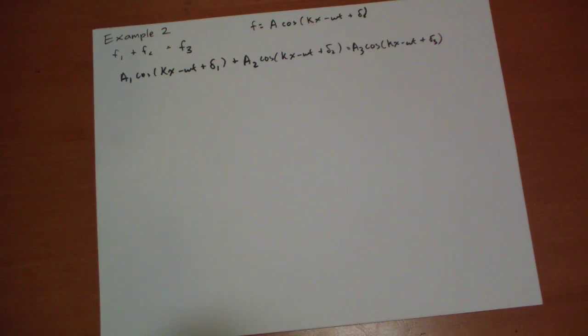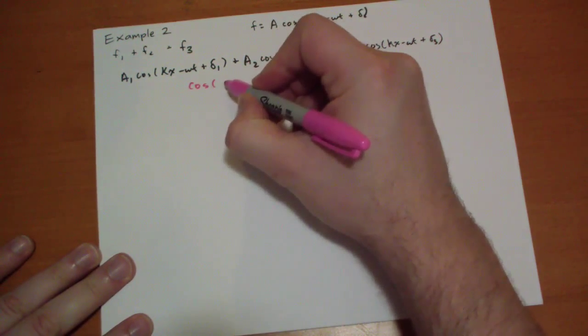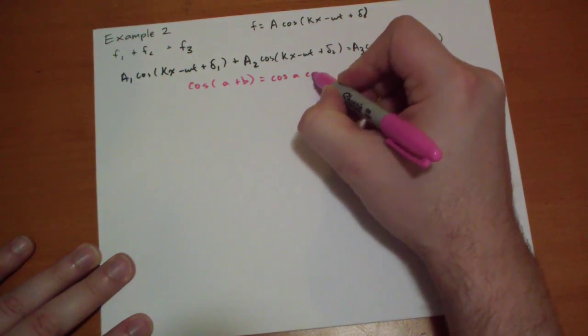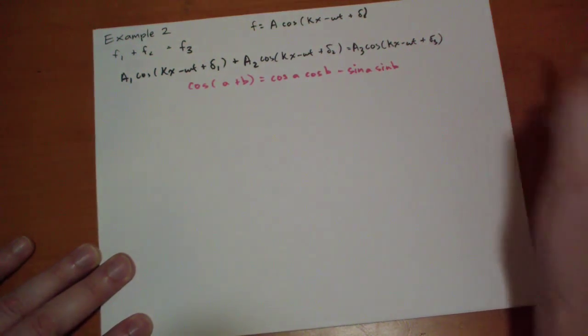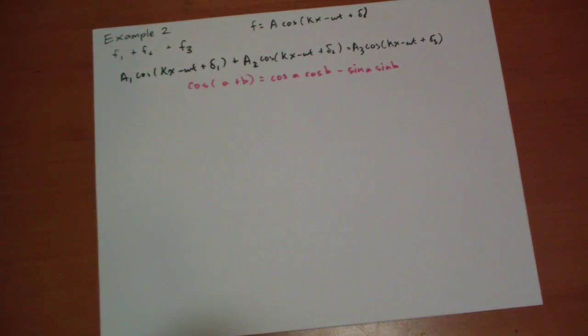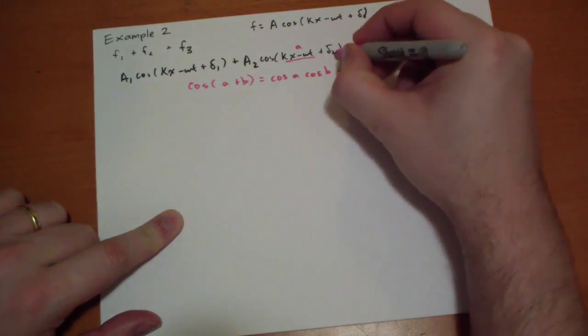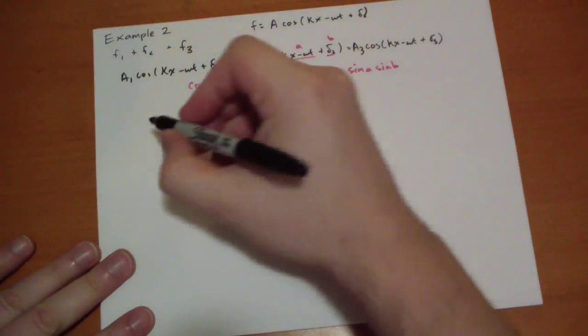Now at this point you should be kind of stuck unless you remember the trigonometric identity that goes cosine of A plus B is equal to cosine of A times cosine of B minus sine of A times sine of B. So over here we have our A's and then we have a B here, and this one has a different A and a different B.